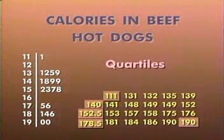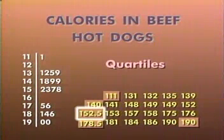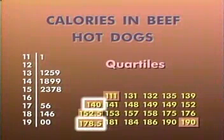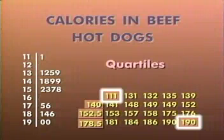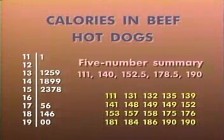The median and the quartiles, together with the smallest and largest observations, give a compact description of the distribution. The median marks the center. The quartiles contain between them the middle half of the data. The two extremes show how far out the data extend. These five numbers are called the five-number summary of the distribution.